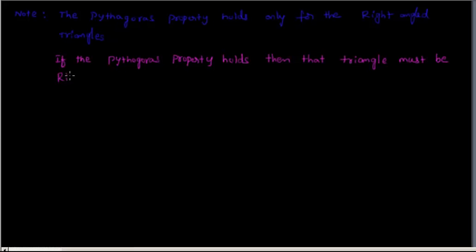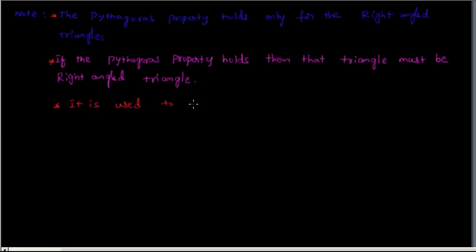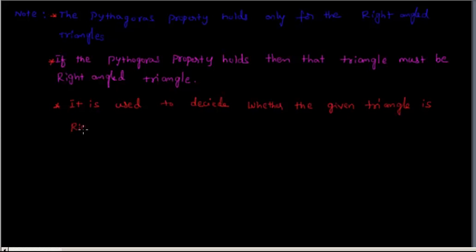Conversely, if the Pythagoras property holds for a triangle, then that triangle must be a right-angled triangle. This property is used to decide whether a given triangle is a right-angled triangle or not.